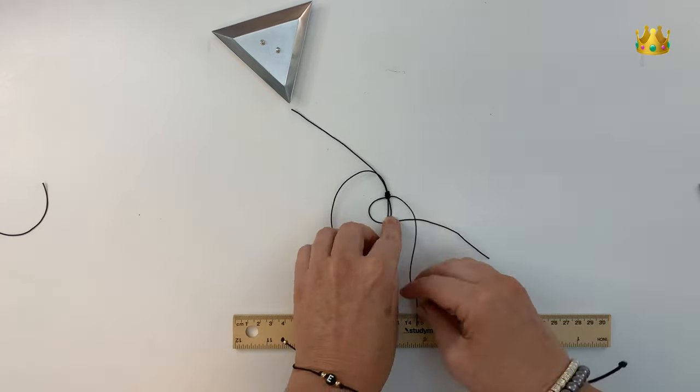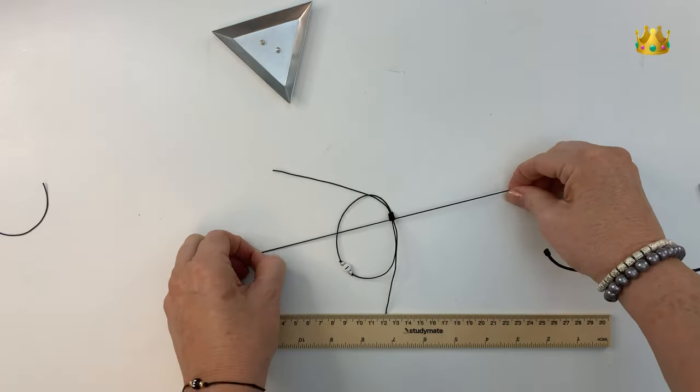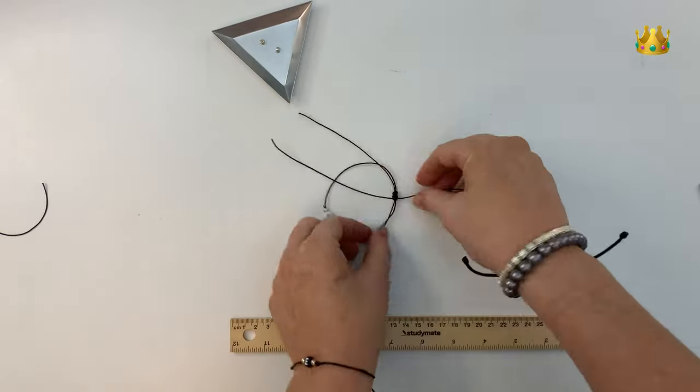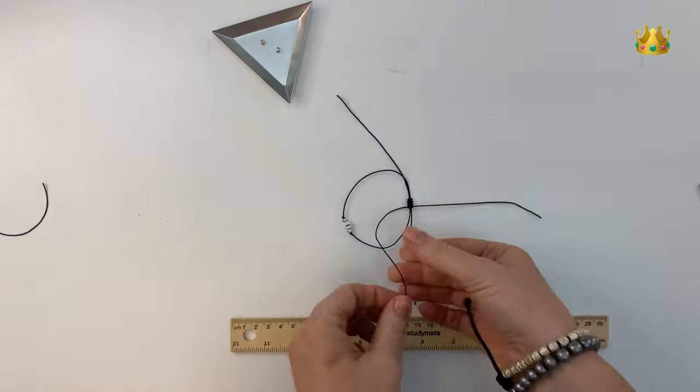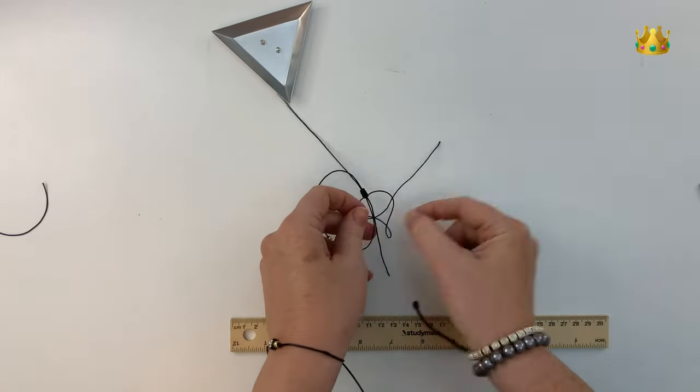Just continue alternating these same stitches left and right, until your little square knot is as long as you want it to be. I usually do about six or eight stitches depending on the bracelet.